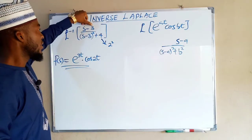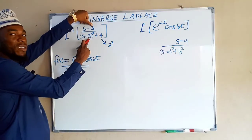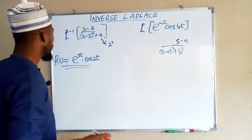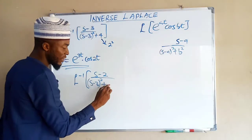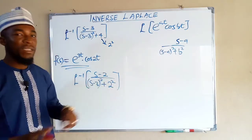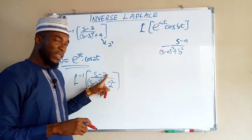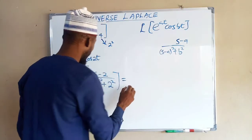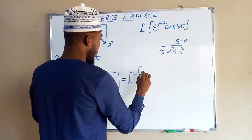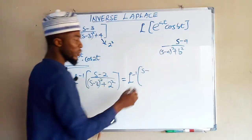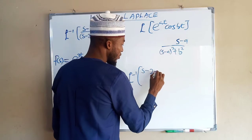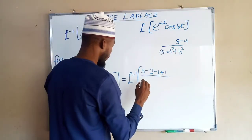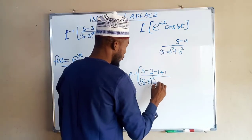But what if the value in the numerator is not 3? It must correspond to the 3 in (s minus 3) to obtain the correct form. Suppose this number is 2 instead — we need to ensure the expression still reads s minus 3. To do that, we subtract 1 and add 1 at the same time, giving us the inverse Laplace transform of (s minus 2 minus 1), divided by (s minus 3)² plus 2².